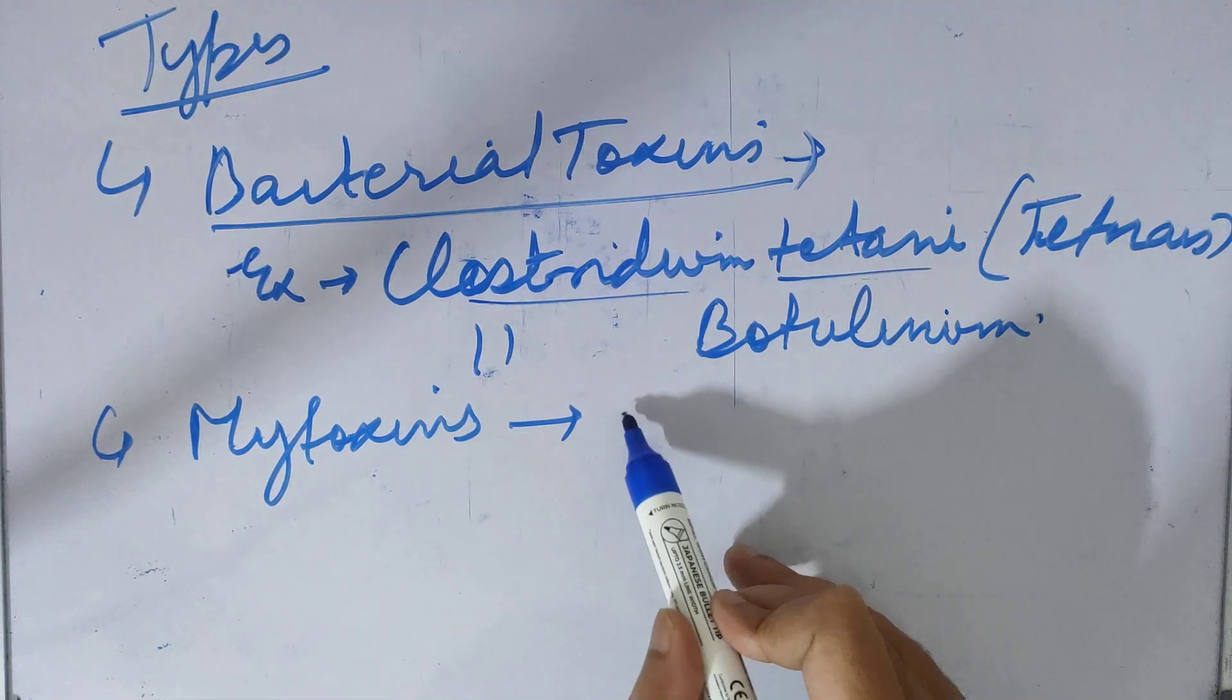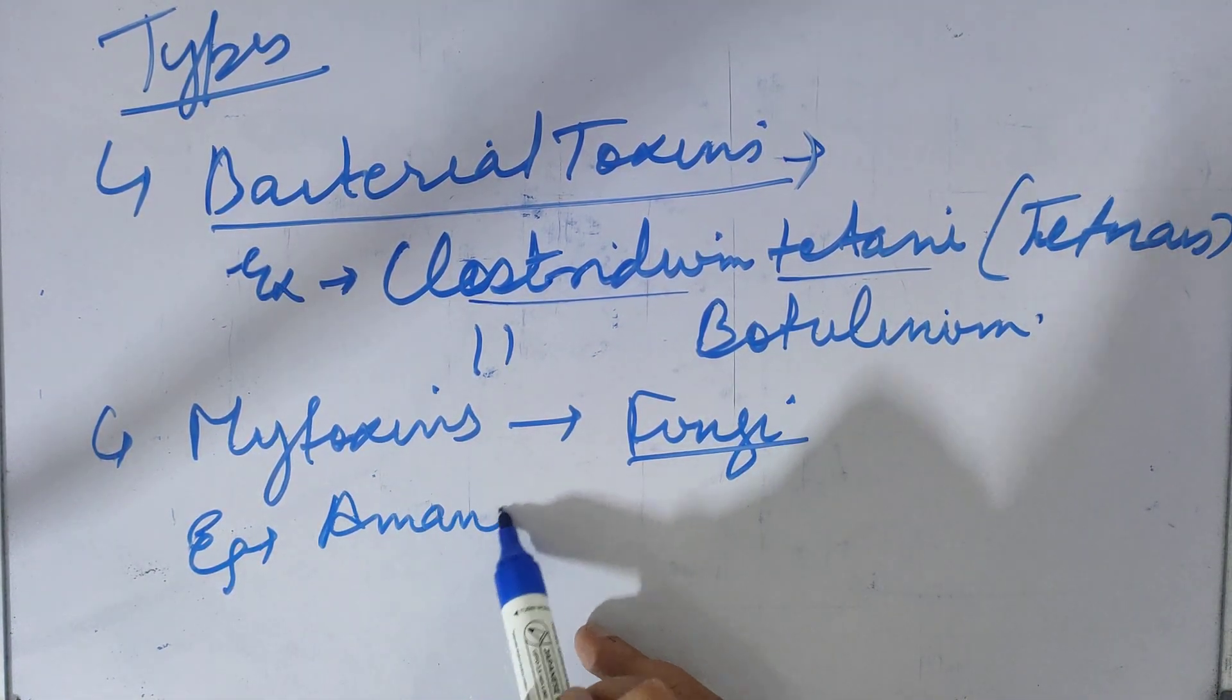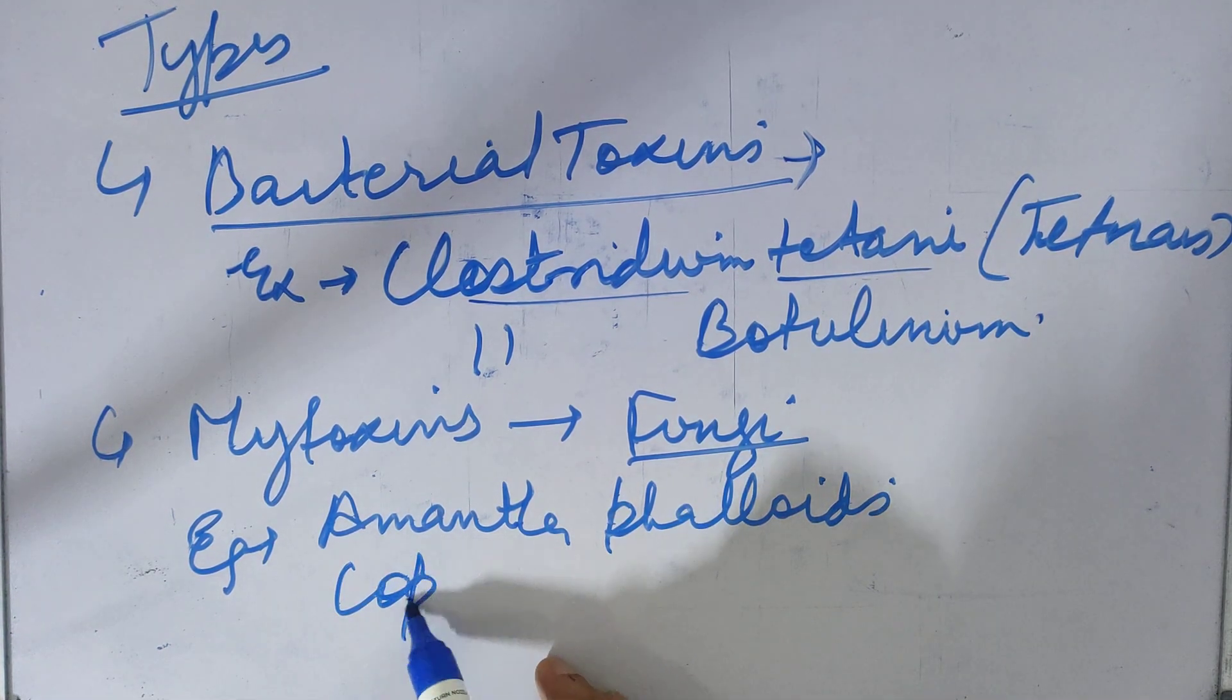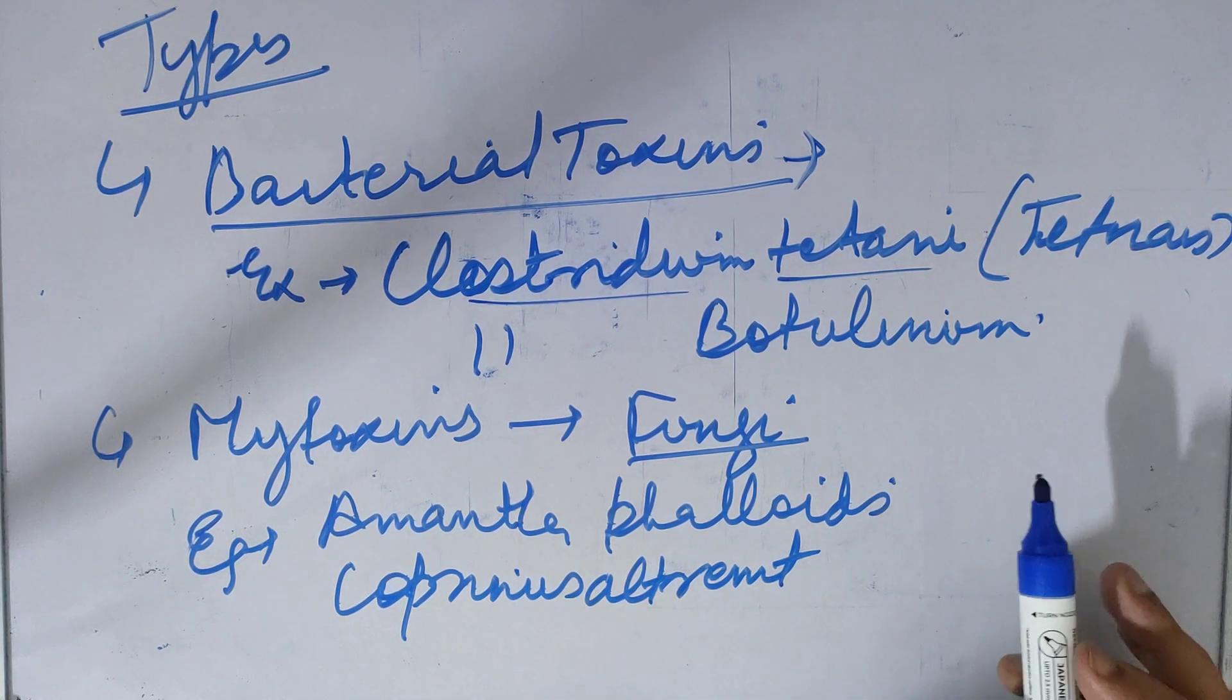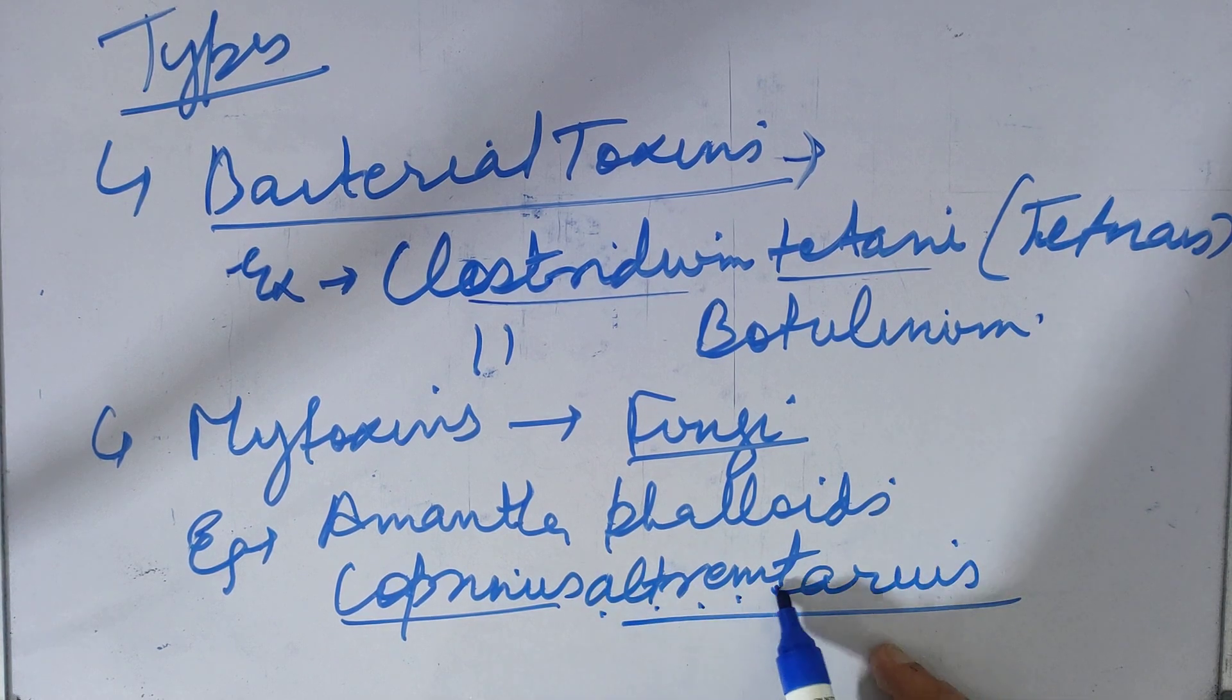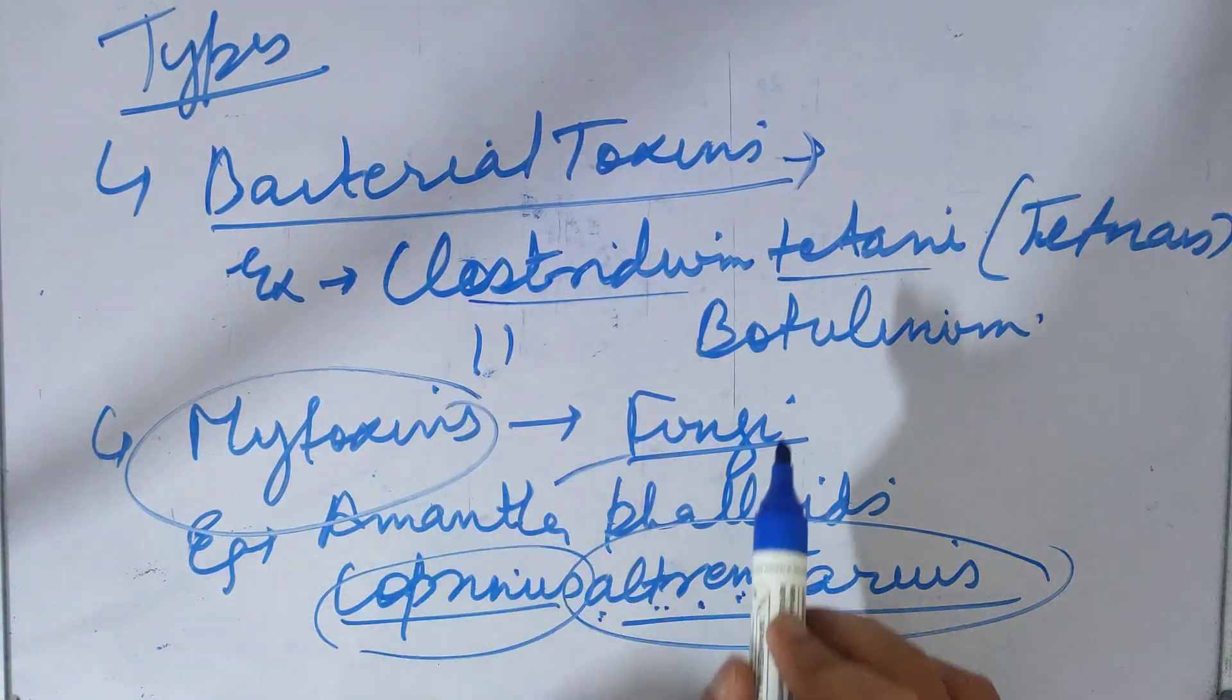Next we have mycotoxins. Mycotoxins are produced by fungi, for example such as Amanita phalloides, Coprinus atramentarius. These are examples of mycotoxins which are released from fungi.